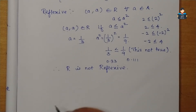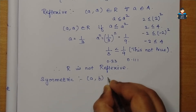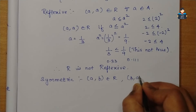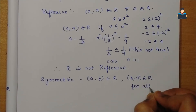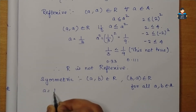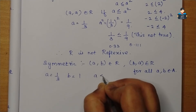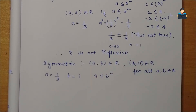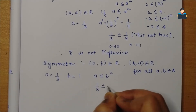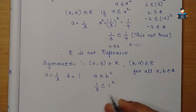Next, we check the symmetric condition. The condition is: if (a,b) ∈ R, then (b,a) ∈ R for all a,b belonging to the set. We check with a = 1/3, b = 1. The condition is a ≤ b², so 1/3 ≤ 1² = 1. This is true, so (1/3, 1) ∈ R.